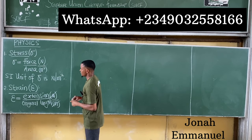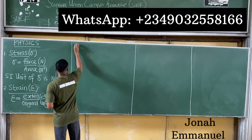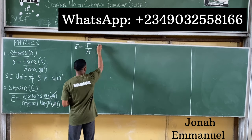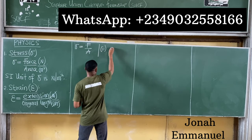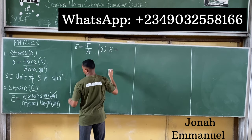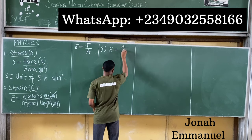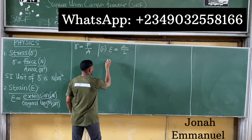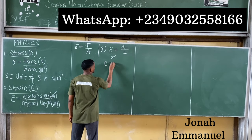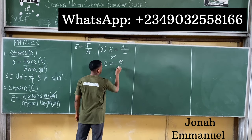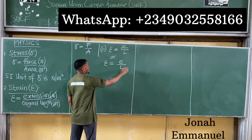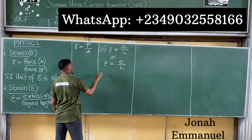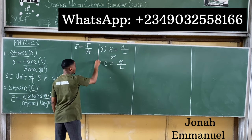So far so good: stress is equal to force over area, and strain is equal to extension — also called change in length — over original length. Some authors call extension 'E', so you can write strain as E over L. Whether you call it change in length or extension, they are the same thing.